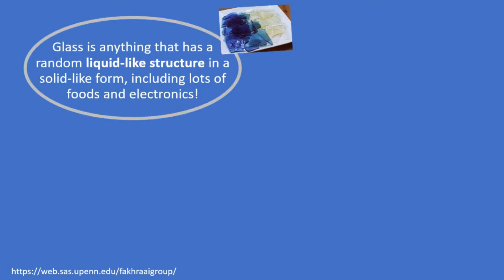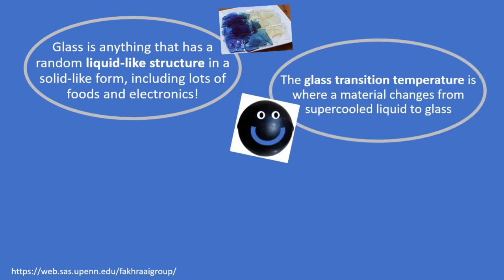First, we learned that glass is anything that has a random liquid-like structure in solid form, including lots of things you might not think about like foods and electronics. After that, Sarah showed us her happy and sad ball demo, where we learned that the glass transition temperature is where a material changes from a supercooled liquid state into its glassy state.